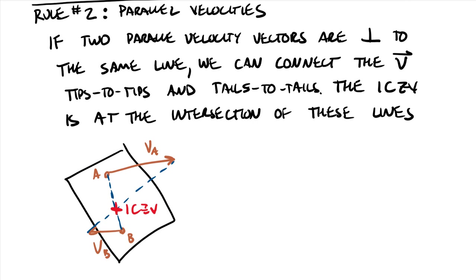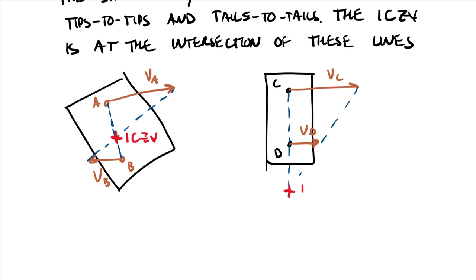Now we can additionally show the velocities don't have to be going in the opposite direction. They could be going in the same direction. Let's look at another situation here. So I'll call this C, I'll call this D. Let's say that here is our velocity of C and a shorter here velocity of D. So here's my tail to tail, continue this one down. Here's my tip to tip. We find out that our ICZV is down here toward the bottom.